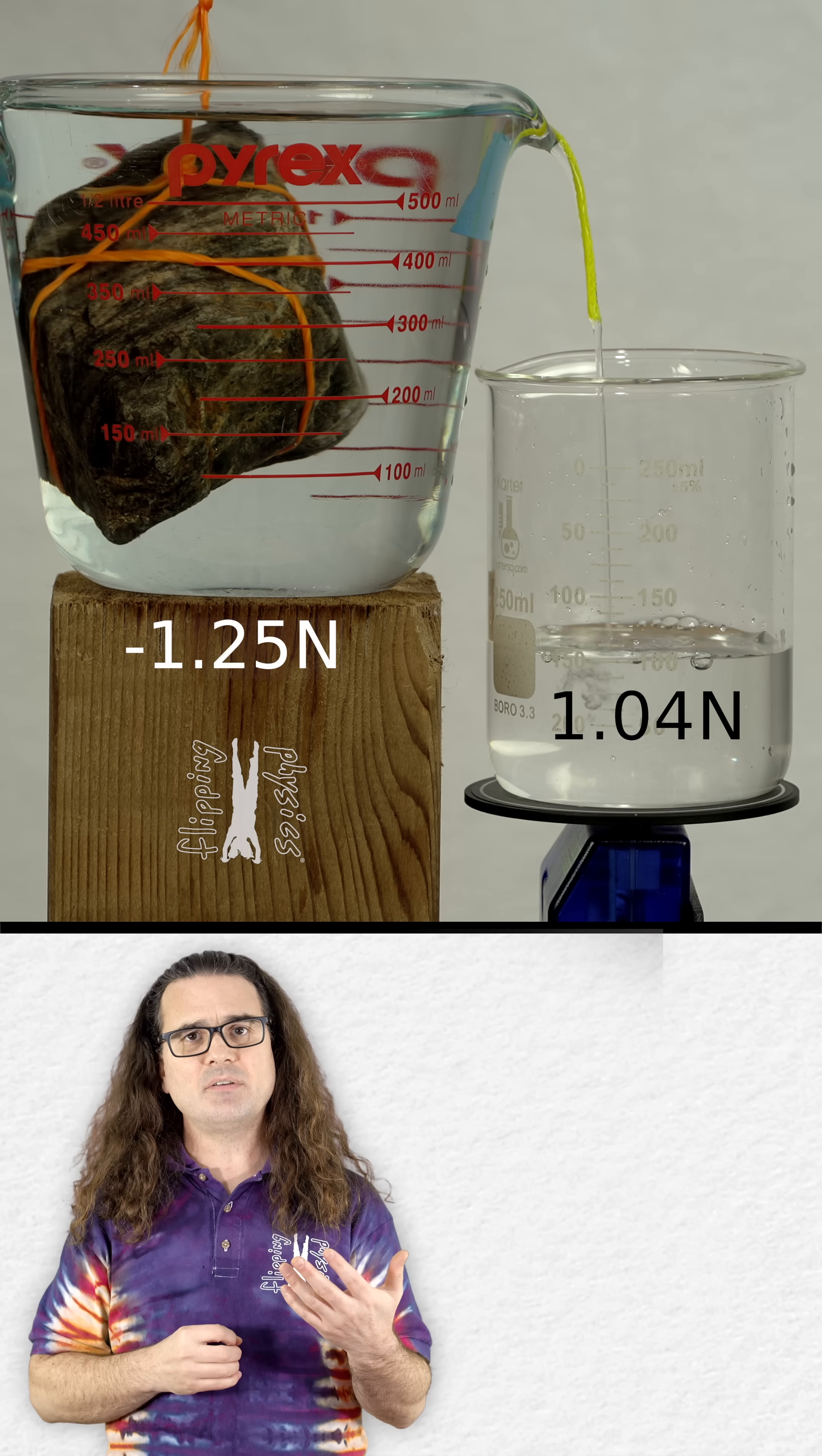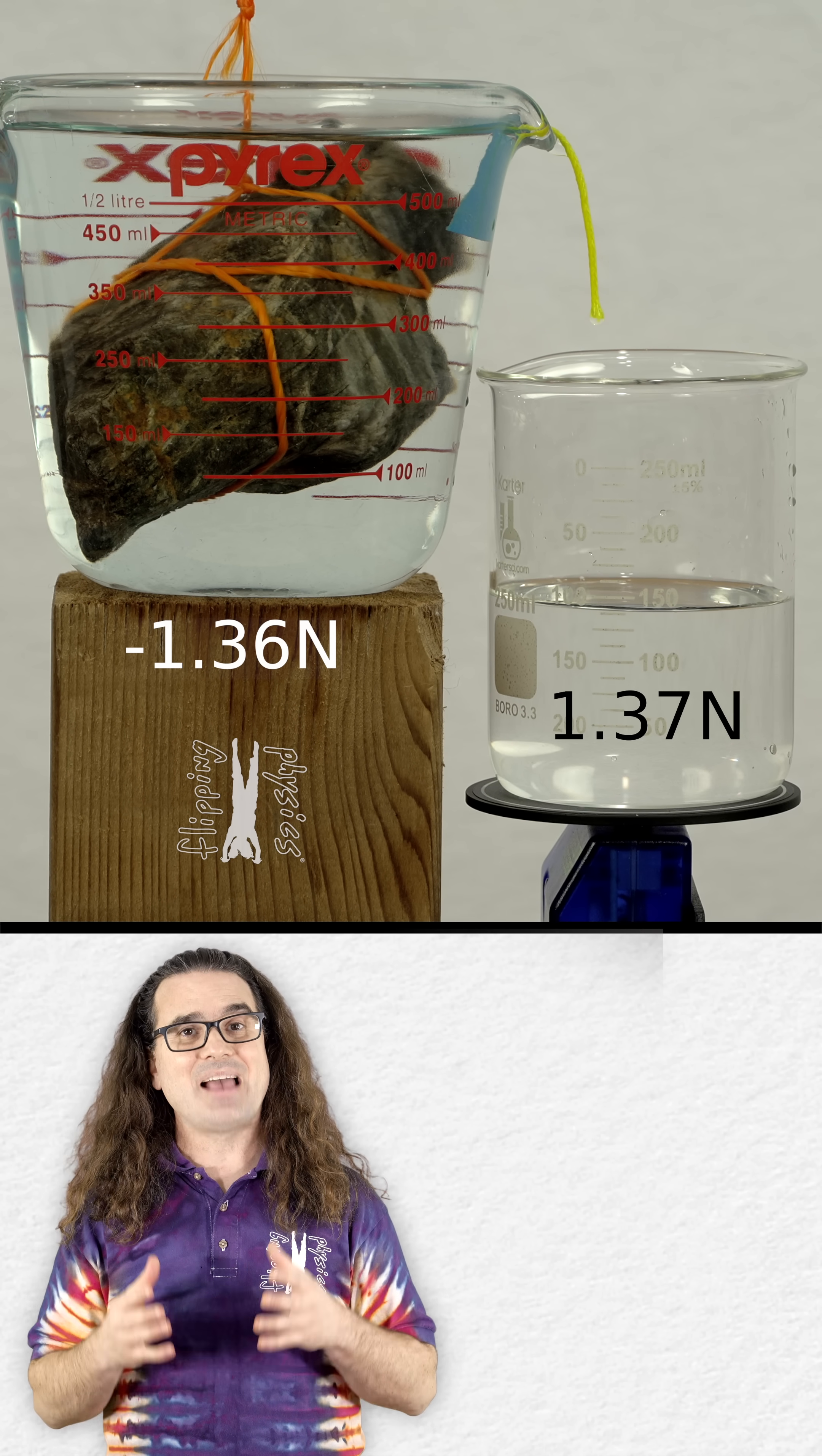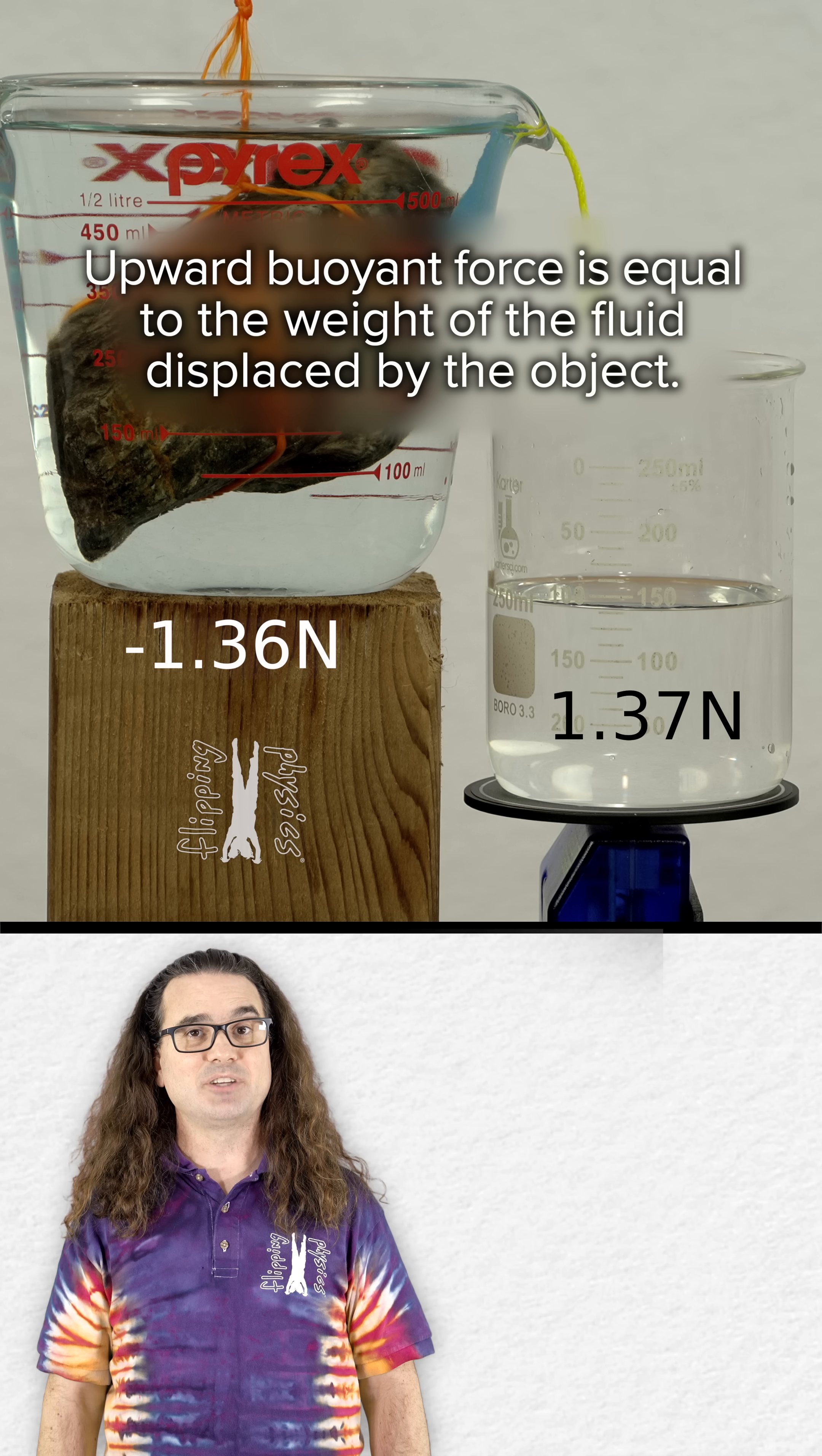You can see the magnitude of the buoyant force is still 1.36 Newtons and the weight of the water displaced by the rock measures 1.37 Newtons, which is, with less than 1% error, the same as 1.36 Newtons. The buoyant force acting on an object is equal to the weight of the fluid displaced by that object.